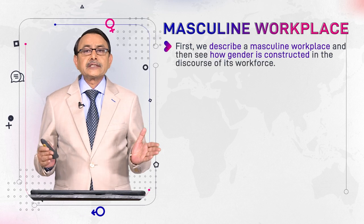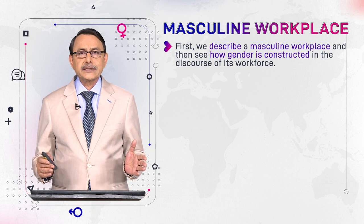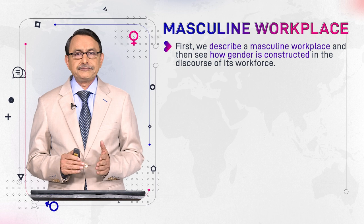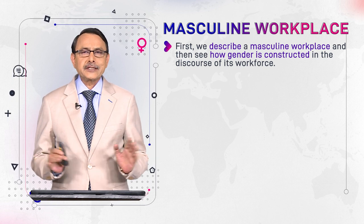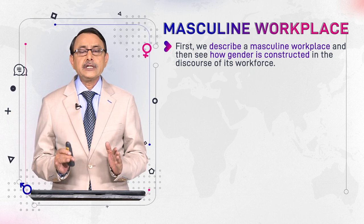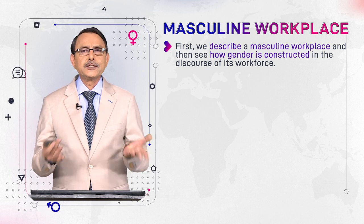In this module we will see a workplace where staff is male and headed by a female boss. We describe a masculine workplace and then see how gender is constructed in the discourse of its workplace. Gender is something abstract — we cannot see it. If we want to see its relation with language, we can only see it when language is used.